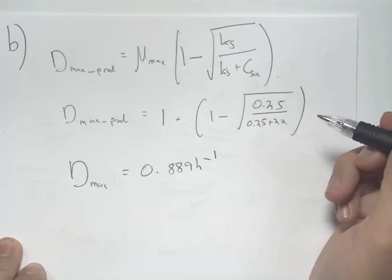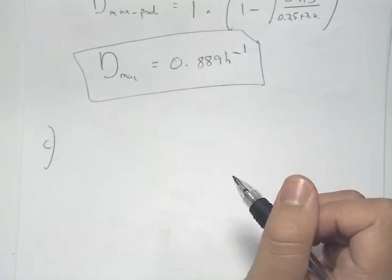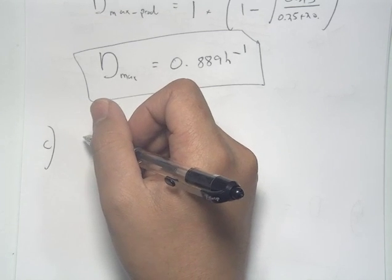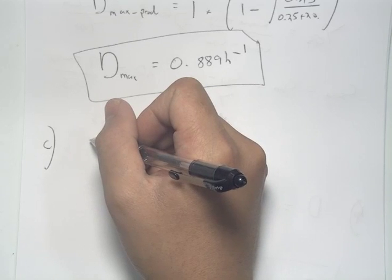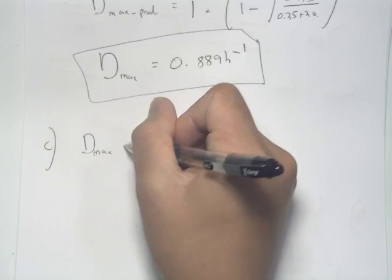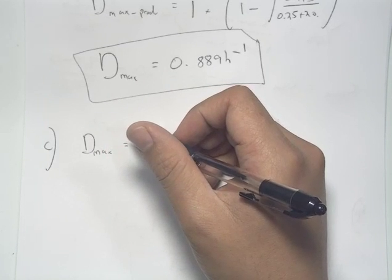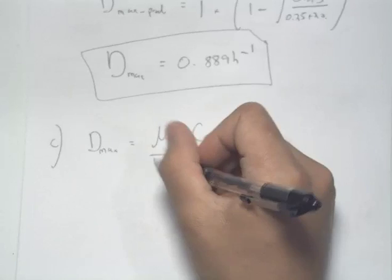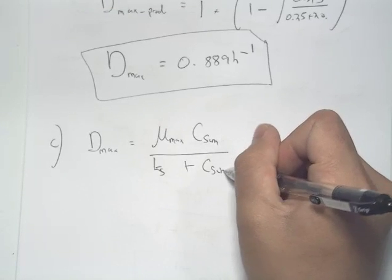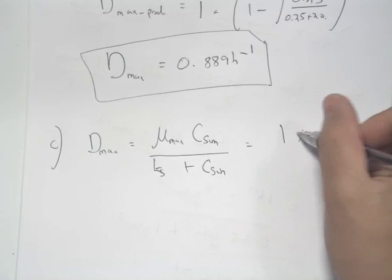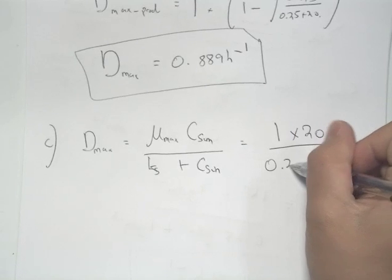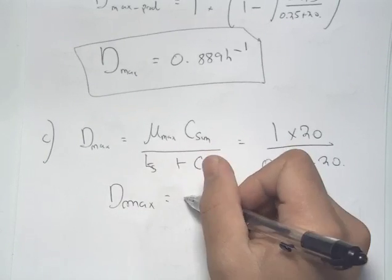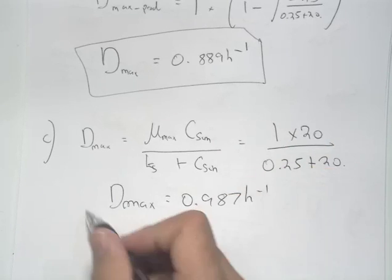Part C asks for the dilution rate at which washout will occur. The maximum dilution rate before washout is equal to the maximum specific growth rate times the concentration of substrate in, over the Monod constant Ks plus the concentration of substrate in. Substituting the values: 1 times 20, over 0.25 plus 20, we get a dilution rate of 0.987 hours to the minus 1 — the point at which washout will occur.